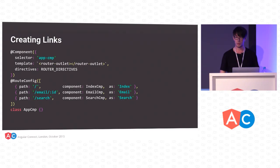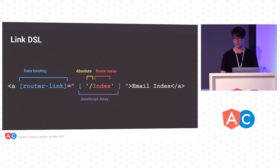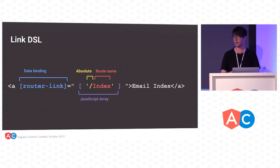Then we can go into the top-level component and add some code. We have this router-link directive, and these link to Index and Search respectively. In Angular 2, you represent property bindings with square braces, and the thing on the right-hand side is the value. In this case, we have a JavaScript array containing a single string — a leading slash. This tells the component router that this is an absolute route. It has a route name, and we'll revisit what it means to be absolute versus relative later.